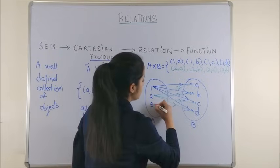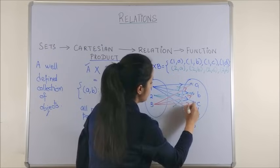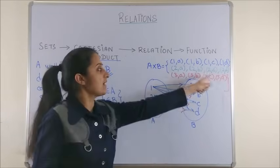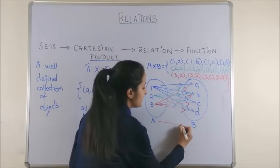So we get these elements to be 2A, 2B, 2C and 2D. And lastly, beginning with 3, we can once again connect each of these, 3A, 3B, 3C, 3D. This is our entire Cartesian product which moves from A to B.